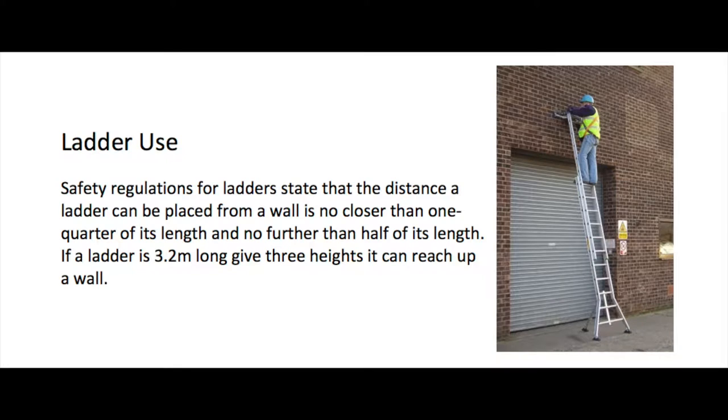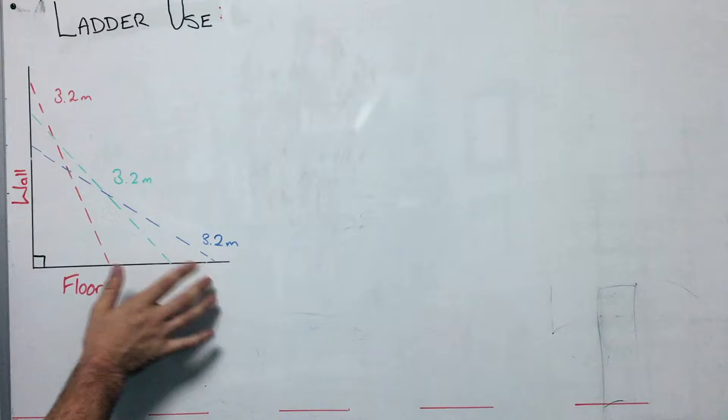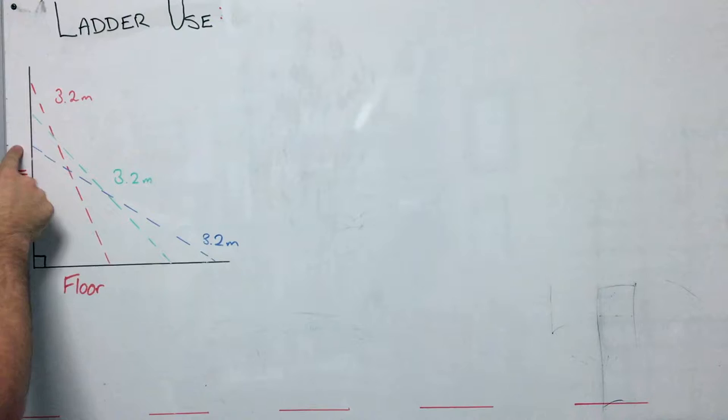Alright, so we're looking at the ladder use question today, and what this question wanted us to do is to solve for how high up the wall we can have a ladder standing. So we have our ladders down here, represented by the red, the green, and the blue line. And what we want to find is how high up on this wall they're going to lie.